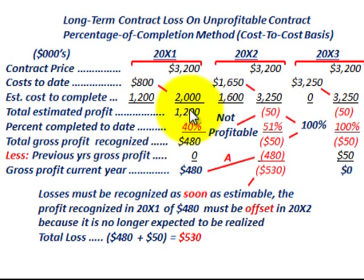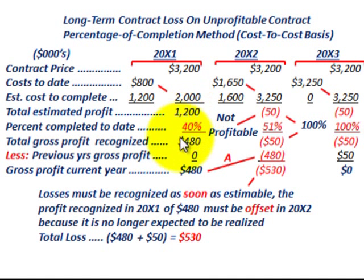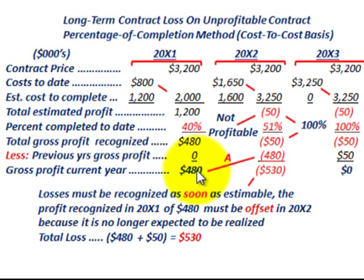We determine percent complete using the percentage of completion method: cost to date of $800K divided by total estimated cost of $2,000K gives us 40% complete. So 40% of the total estimated profit of $1,200K gives us gross profit recognized in 20x1 of $480K. Since this is the first year, there's no previous profit to subtract, so the current year gross profit is $480K.